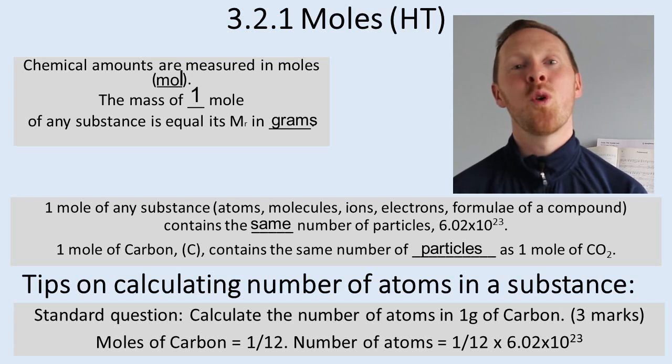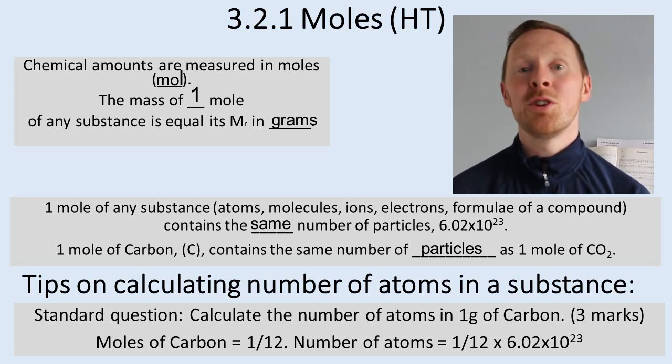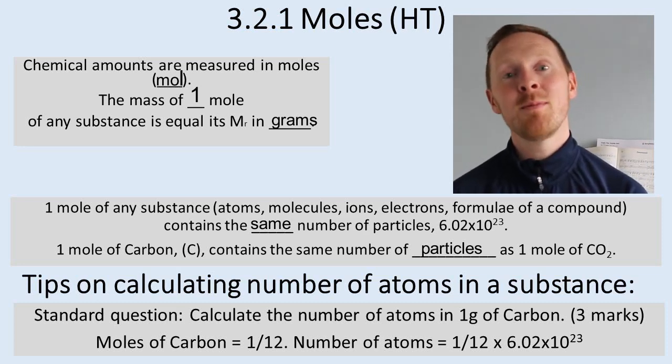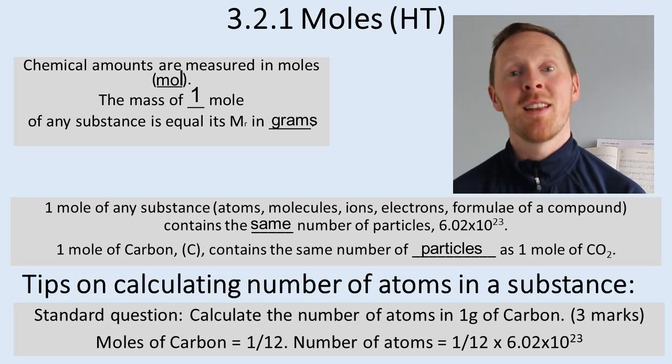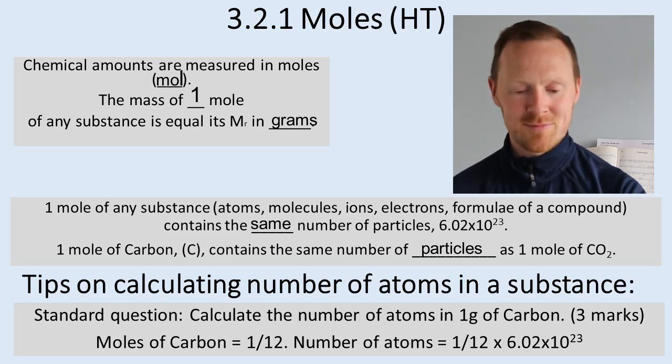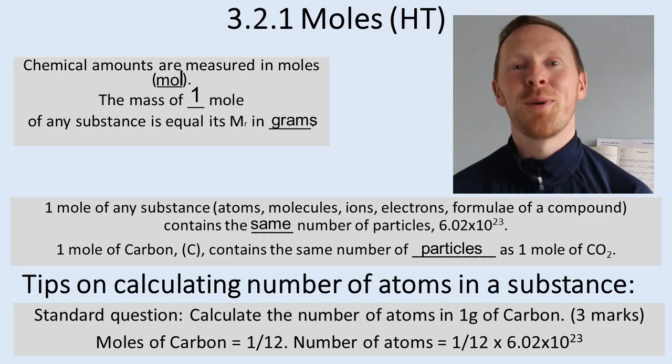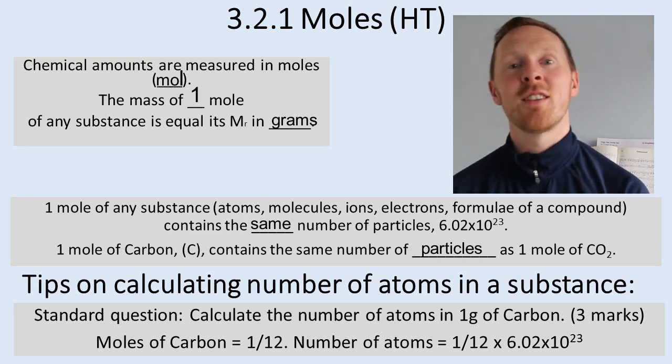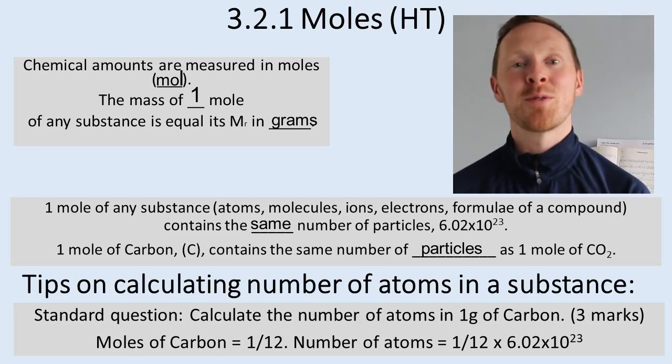For example, how many atoms are in 1 gram of carbon? So you do 1 gram over 12—12 is the relative atomic mass of carbon—and then times it by Avogadro's number and the answer you get is... I'll leave you to work that out yourself. That would be worth 3 marks in an exam if you did it to the correct number of significant figures. So remember what a significant figure is. Make sure you record it to the right amount when you're asked to in an exam.